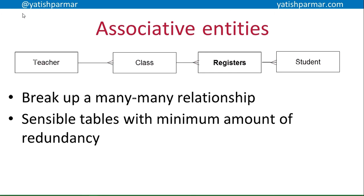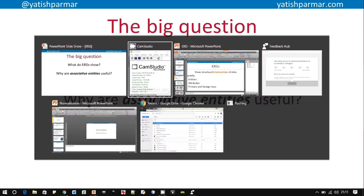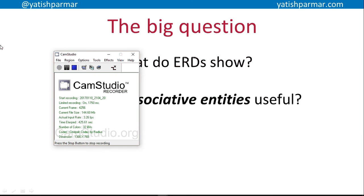There is a certain amount of redundancy you do need: the redundancy in the foreign key, because you need the foreign key to link the two entities together — you are repeating that data in order to create that link. So to summarize: ERDs show the structure and relationships between data, showing entities, primary keys, and foreign keys. Associative entities are useful because they split up many-to-many relationships.